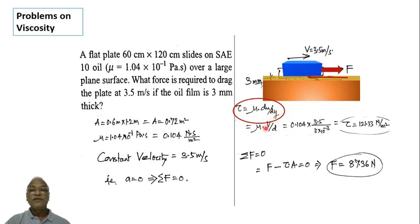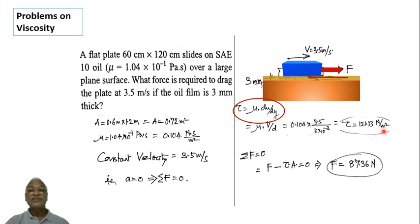Substituting: velocity is 3.5 meter per second and thickness of the oil film is 3 into 10 raised to minus 3 meters. This gives tau as 121.33 Newton per meter square. To get the viscous force, multiply tau by area A. Then applying sigma F equal to zero gives the applied force F.